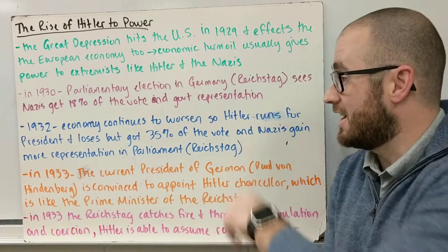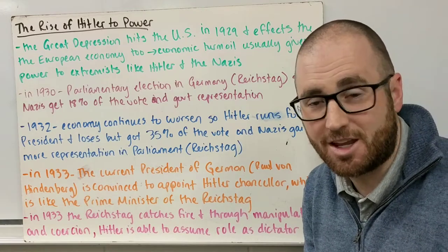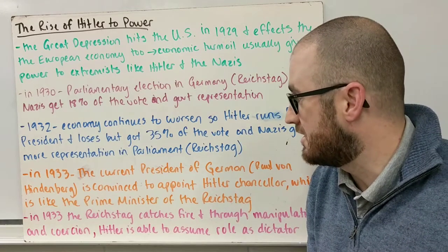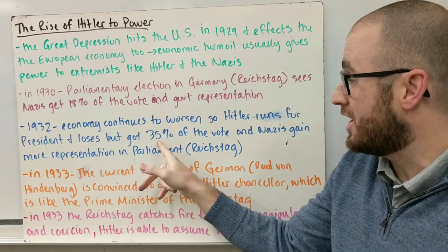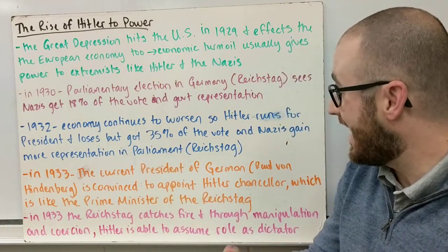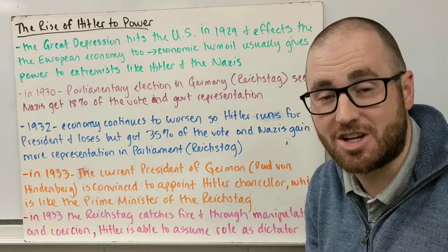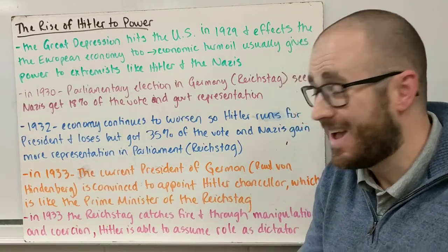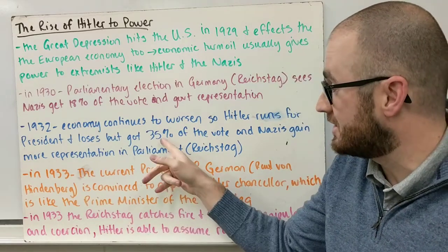In 1932, the economy continued to get worse, so Hitler decided to run for president. He lost to the sitting president, Hindenburg, but he got 35 percent of the vote. The Nazis also continued to gain more representation in the Reichstag.